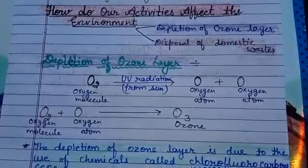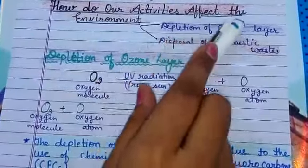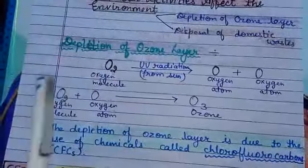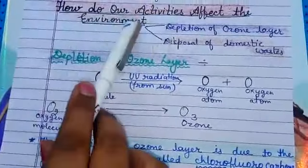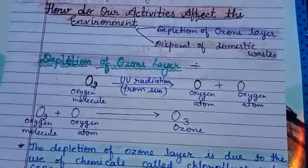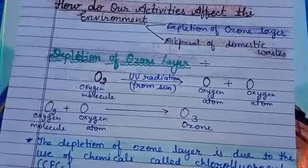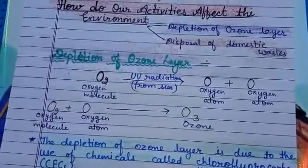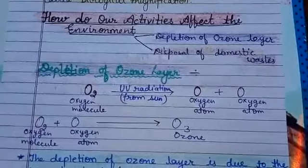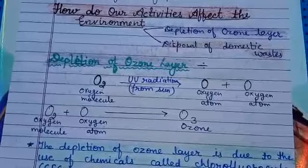Now continue with the next topic: How do our activities affect the environment? Humari activities, yani men's ki activities, say environment par kya effect pardata hai? We, human beings, are an important part of the environment. Our activities change the environment around us, and the changes in the environment then affect us.